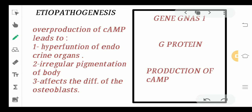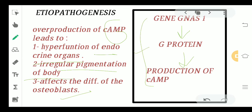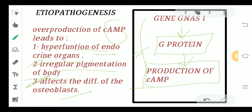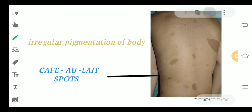Moving ahead to the etiopathogenesis — what is responsible for causing fibrous dysplasia? A particular gene, GNAS1, leads to the production of G protein. This G protein is further responsible for the production of cAMP. Whenever there is overproduction of cAMP, it leads to hyperfunction of the endocrine glands, irregular pigmentation of the body — some irregular patches or pigmented lesions — and it also affects the differentiation of osteoblasts. These irregular pigmented lesions seen on the patient's body are called café-au-lait spots.